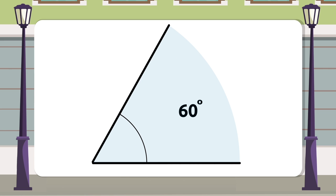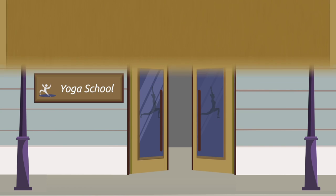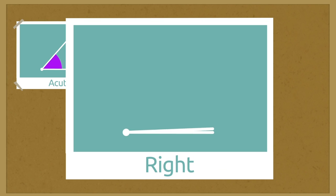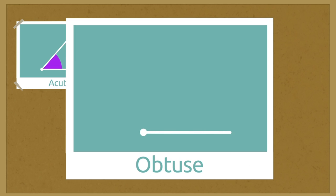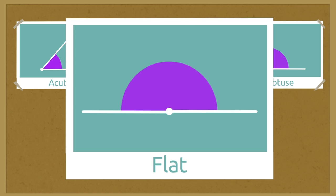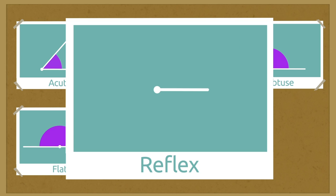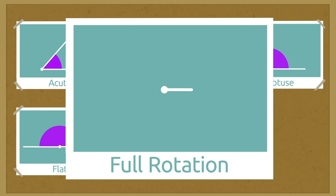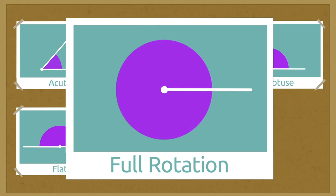Depending on the angle opening, angles can be: acute — they measure less than 90 degrees; right — they measure exactly 90 degrees; obtuse — they measure between 90 and 180 degrees; flat — they measure exactly 180 degrees; reflex — they measure more than 180 degrees; full rotation — they measure 360 degrees.